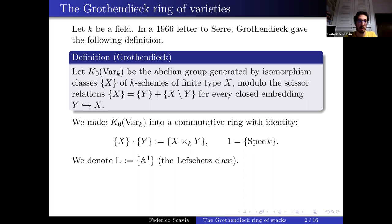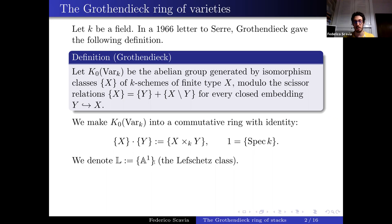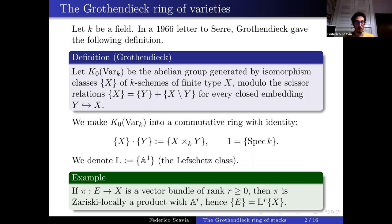K0 Var is an abelian group, but it's also a commutative ring with identity, where the multiplication is defined on the generators by the fiber product over k, extended by bilinearity. The identity of the ring is the class of the point. As a piece of notation, the class of A1, the affine line, is called the Lefschetz class, denoted by L.